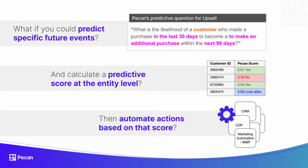The PECAN approach starts with what we call the predictive question. These words allow you to easily communicate the purpose of your model and identify some of its key parameters. For example, it's not just about trying to classify an upsell — it's about predicting the likelihood of a customer who made a purchase in the last 30 days to make an additional one within the next 90 days.